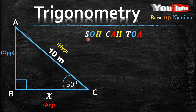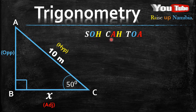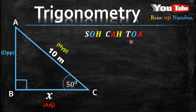When we check SOH, there is an O for opposite in the middle, so we skip that one. We go to CAH. In CAH there is a C, an A, and an H — there is no O. So we will use this ratio. The last one, TOA, has an O there, so we leave that one. We only use the one in the middle, CAH.